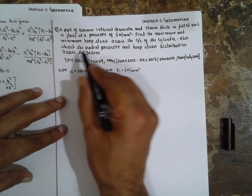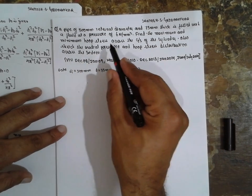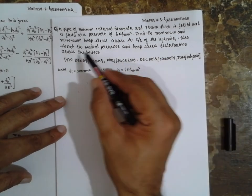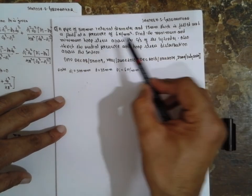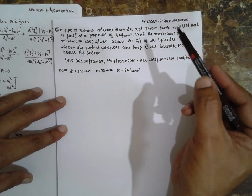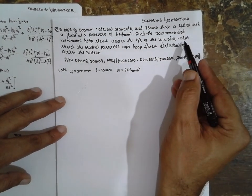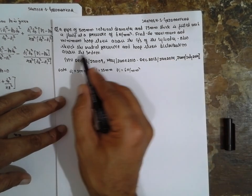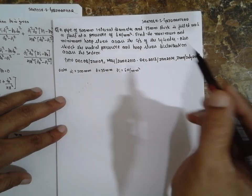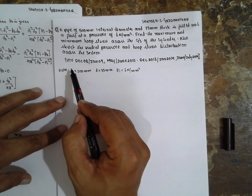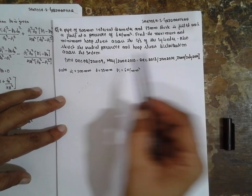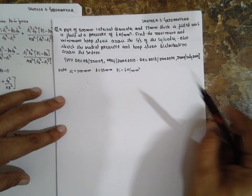Find the maximum and minimum hoop stress across the cross-section — that is nothing but tangential stress. And also sketch the radial pressure and stress distribution across the section. This is one of the problems which is repeated very often.